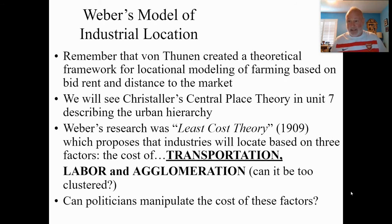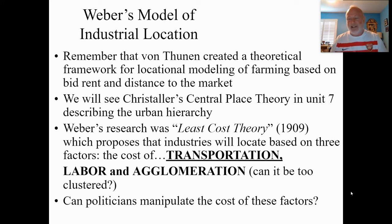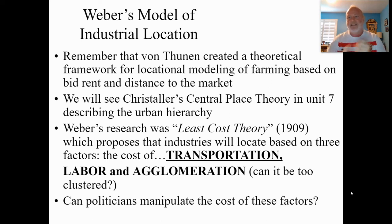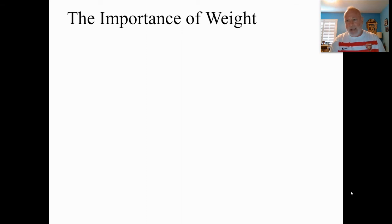Politicians can manipulate Weber's three factors. Transportation costs can be affected by tariffs, taxes, and toll roads. Labor costs are affected by minimum wage laws and unions. Agglomeration or clustering can be influenced by zoning laws and government policies. It's important to remember economic, social, cultural, political, and environmental aspects when analyzing industrial location.